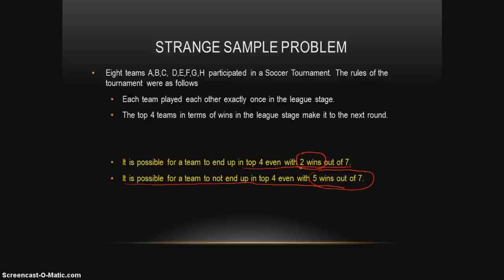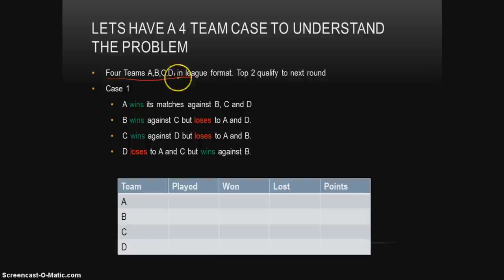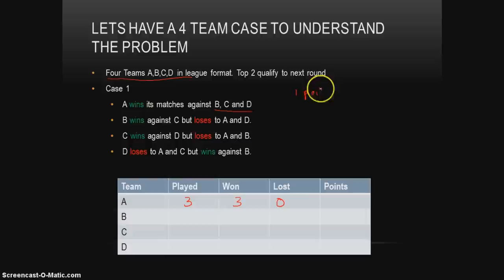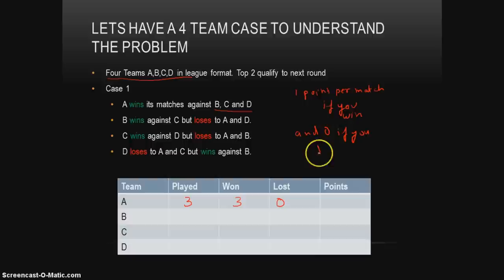This is what makes tournament problems particularly exciting. To understand this peculiarity, let's take a smaller problem: there are 4 teams A, B, C, and D in a league format and the top 2 qualify to the next round. Let's see what the extreme possibilities are. Say A wins all its matches against B, C, and D — so A played 3, won 3, lost 0. With 1 point per win, A has 3 points.